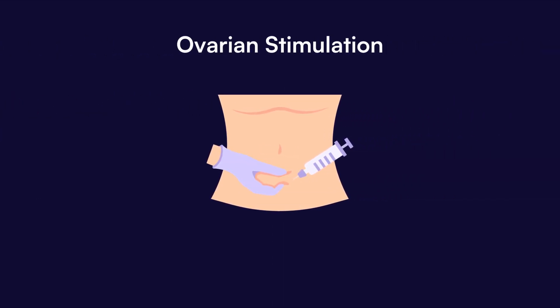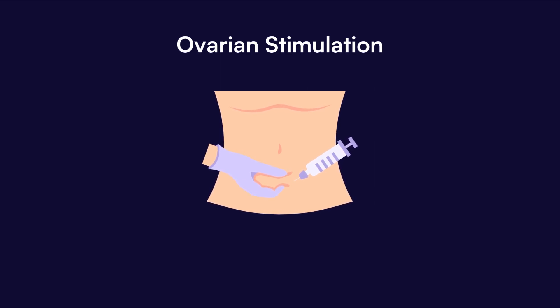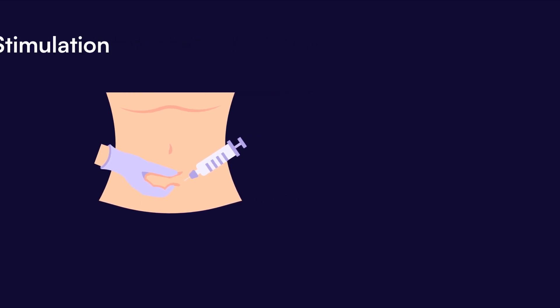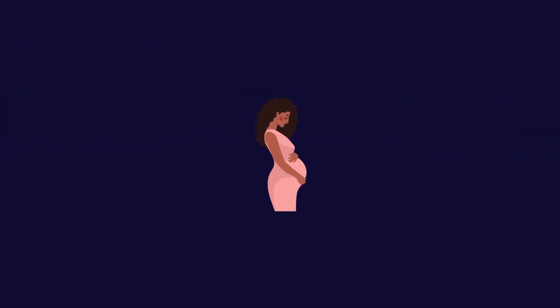Ovarian stimulation. This process involves stimulating the ovaries with hormones to produce multiple eggs. The goal is to have more mature eggs available for retrieval and fertilization, increasing the odds of a successful pregnancy.